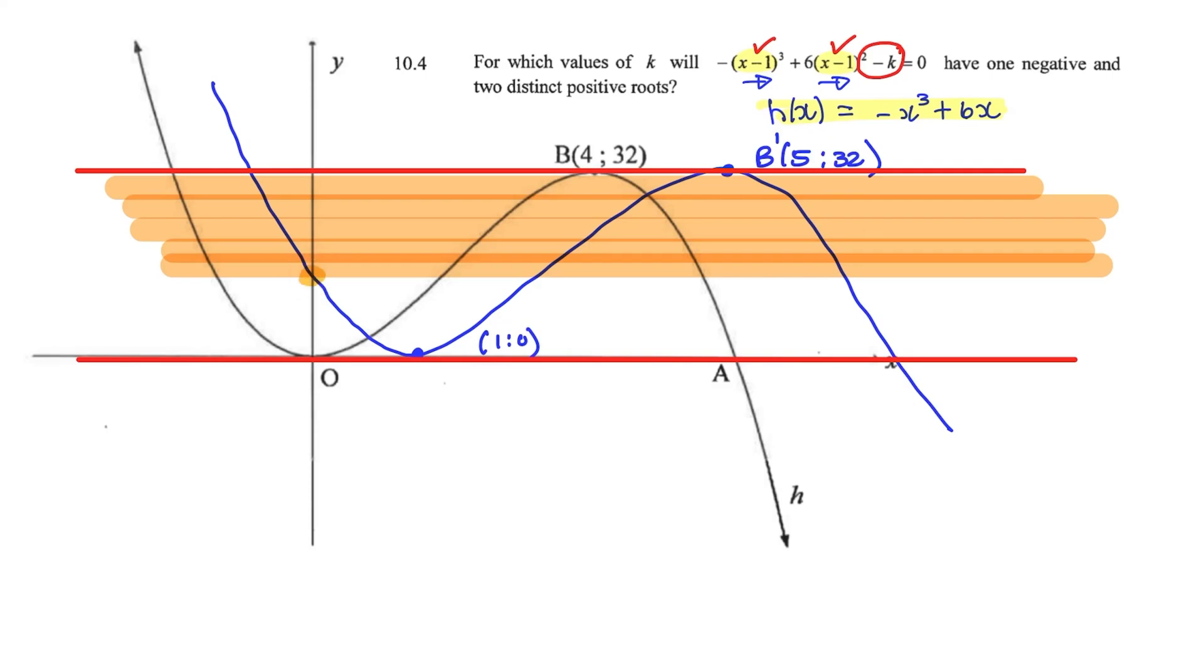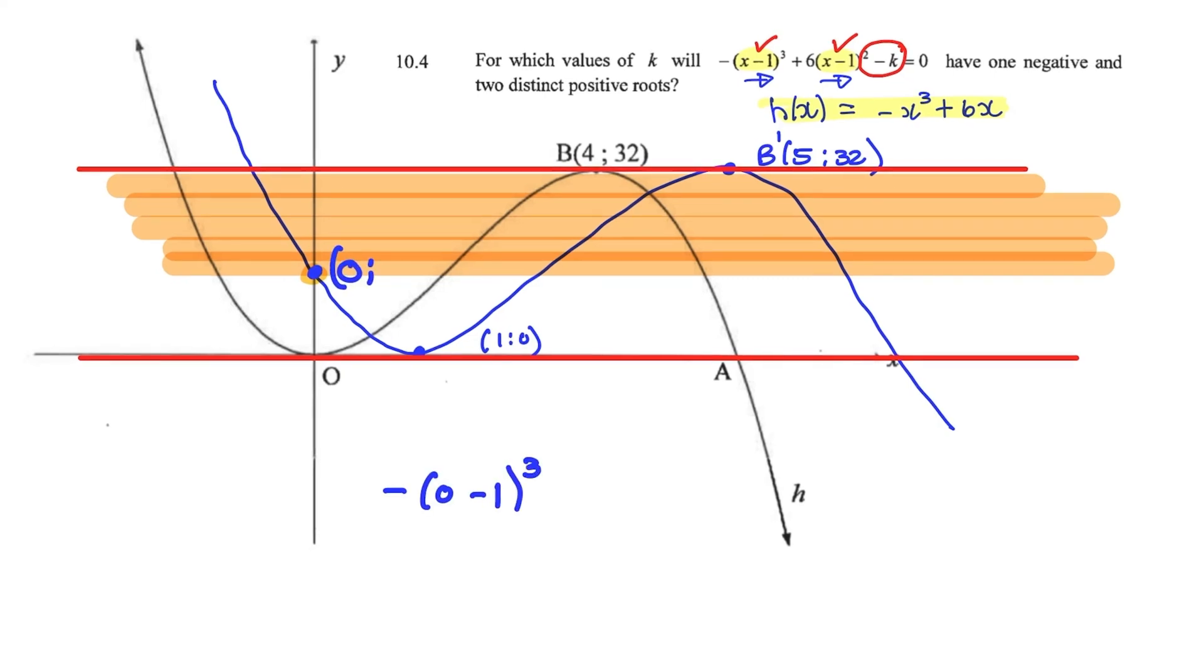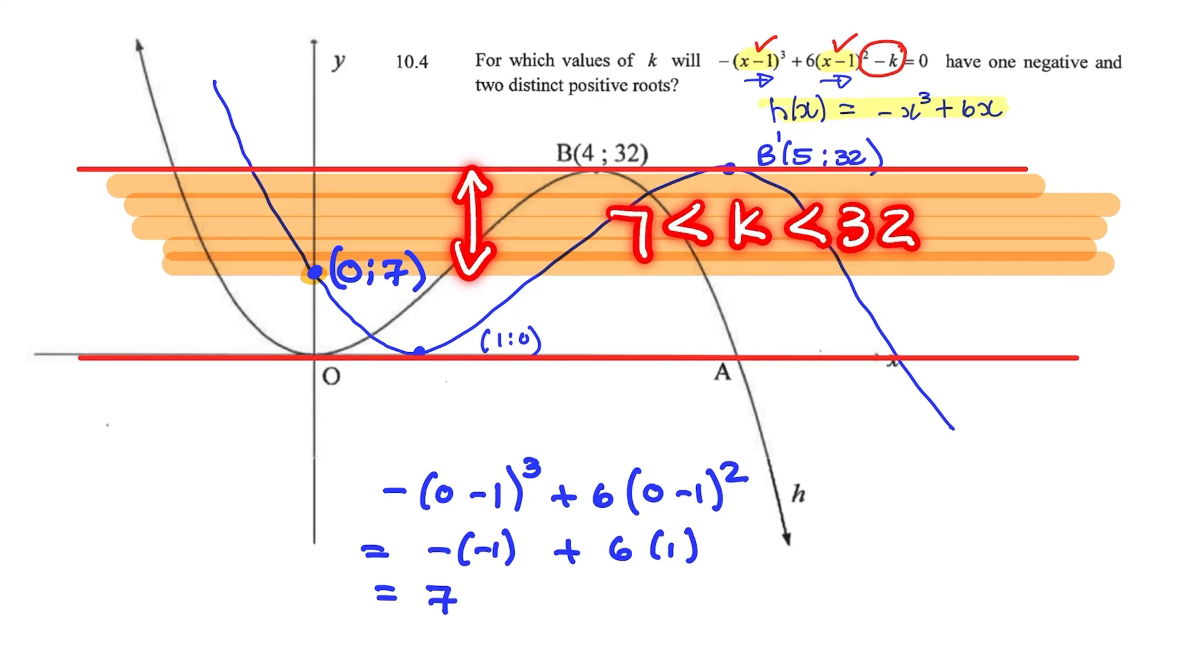So that y-intercept is where x equals zero. So I replace x with zero in that equation, but I'd ignore the k value, because we are trying to determine k. So this would be negative, negative one, plus six times one, which is seven. So that's our second value for k. So this shift needs to happen for values of k between 32 and seven. So the shift needs to be bigger than seven and smaller than 32.